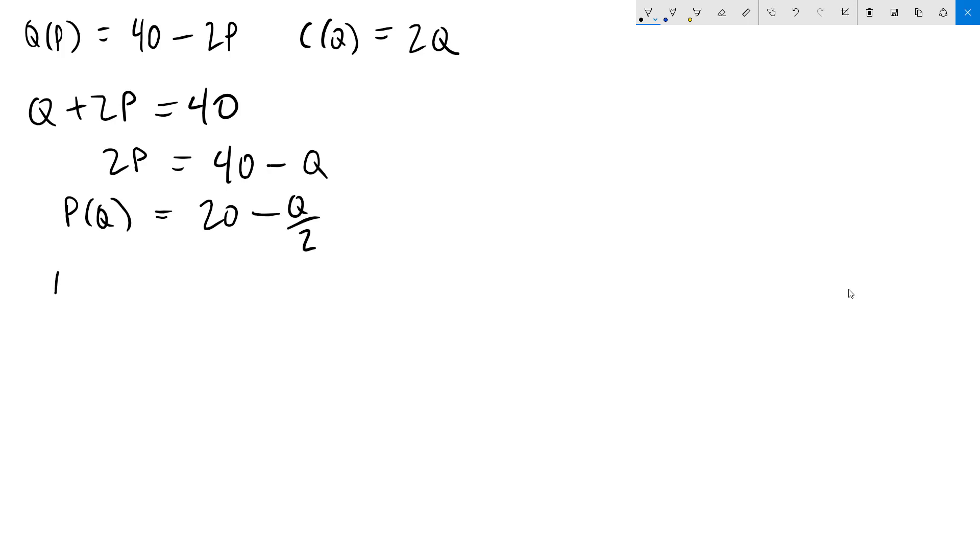We can now double the slope to get the marginal revenue function, so that's going to be 20 minus q, and then we're going to get the marginal cost by taking the derivative of the cost function, and that's going to be 2. We'll use this information as we go forward.